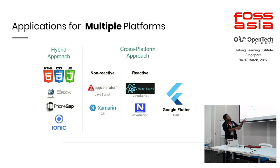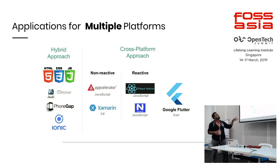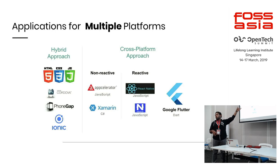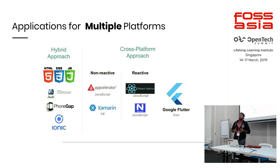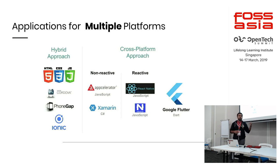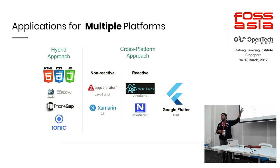Next, we had applications for single platform, and here is a diagram showing applications for multi-platforms — basically a kind of summary. We have two approaches: hybrid or the cross-platform approach. In the hybrid approach, the application is written in a markup language like HTML with CSS styles, and we use JavaScript or a scripting language to add logic. There are famous tools like Cordova, PhoneGap, and Ionic. The other side is the cross-platform approach. In cross-platform we have two parts: reactive and non-reactive.